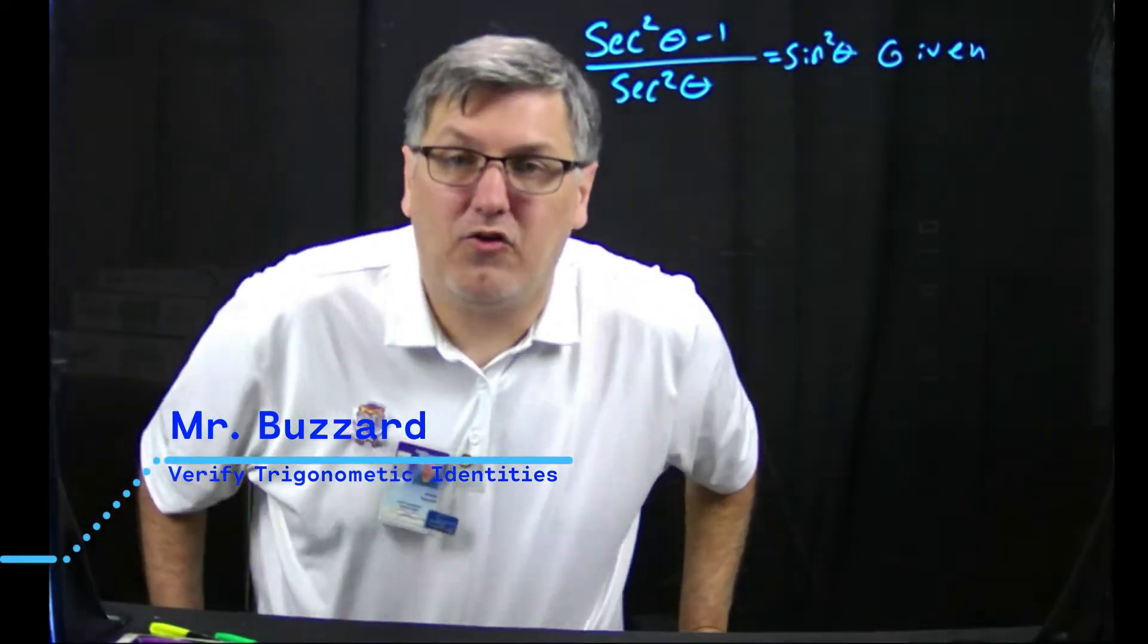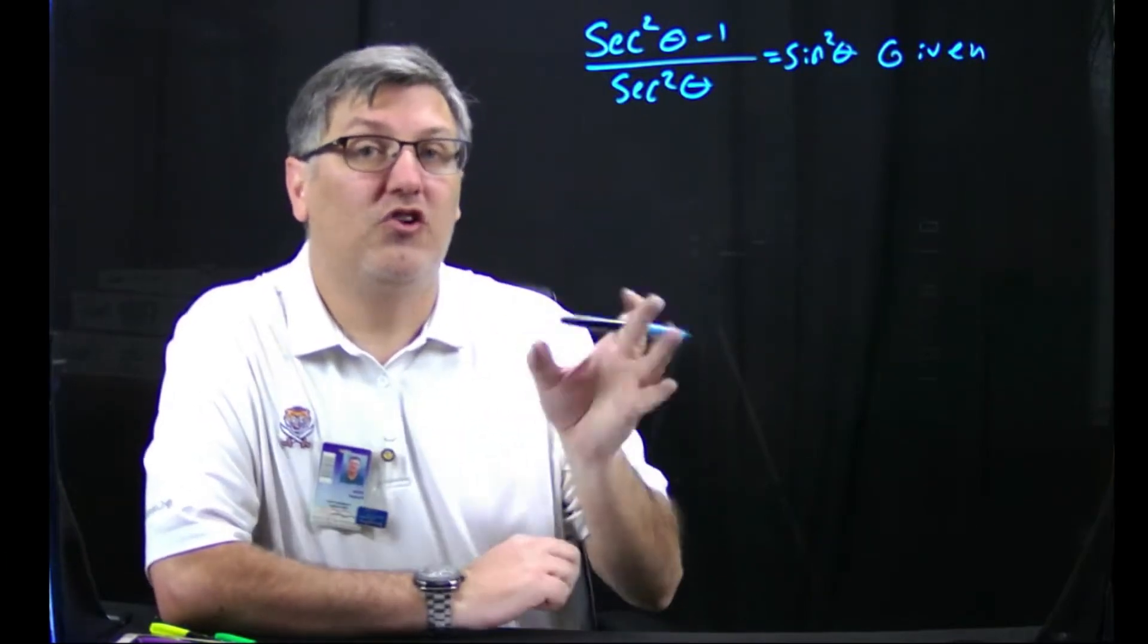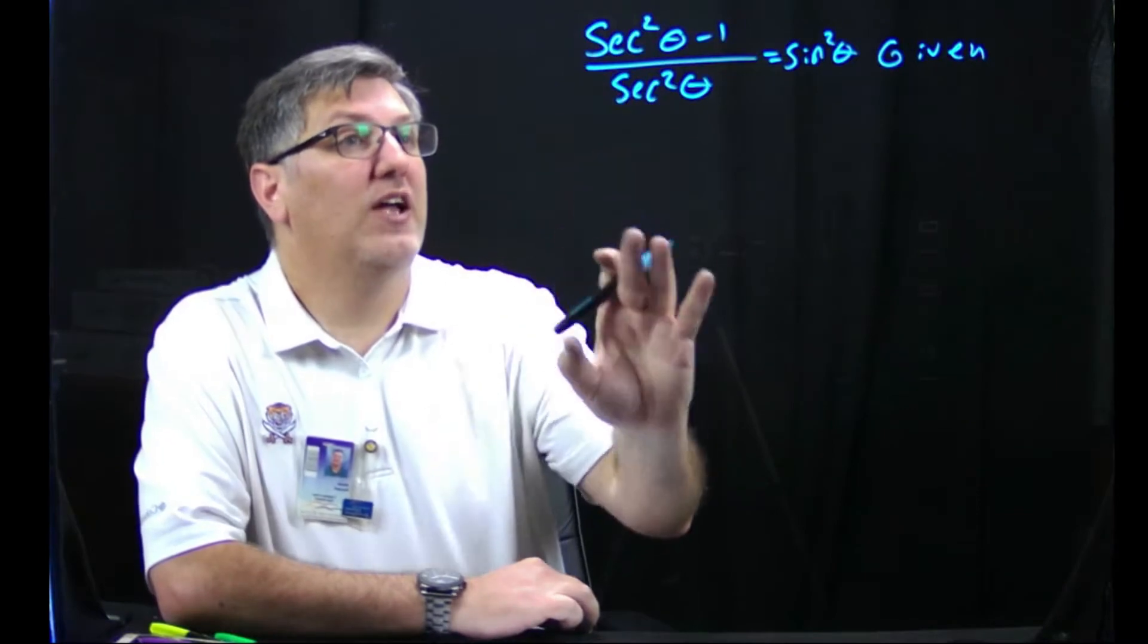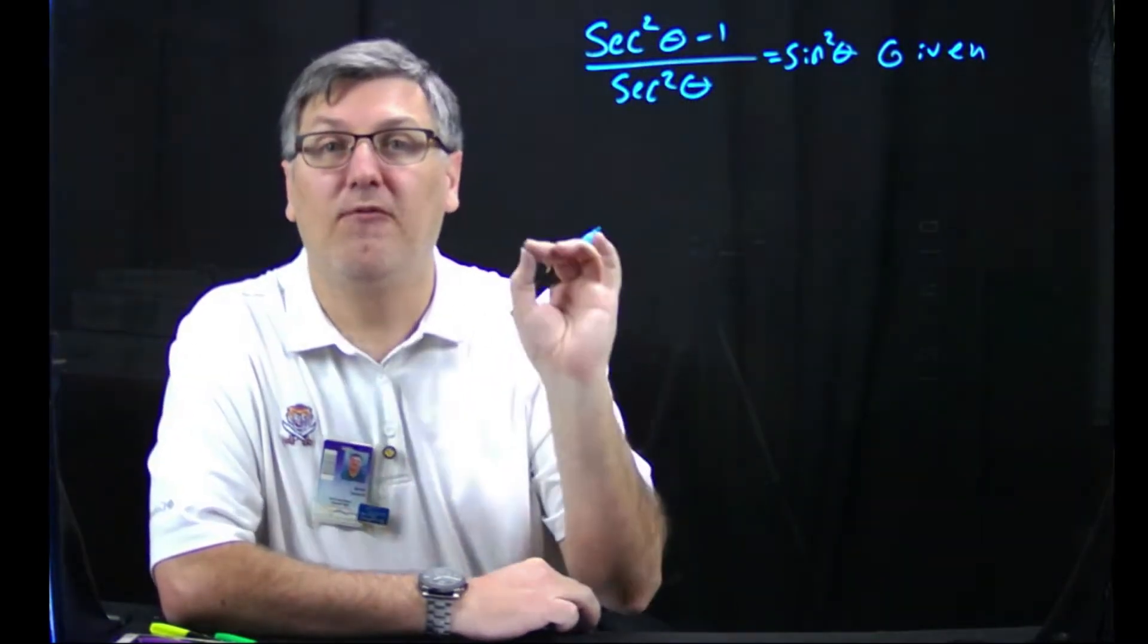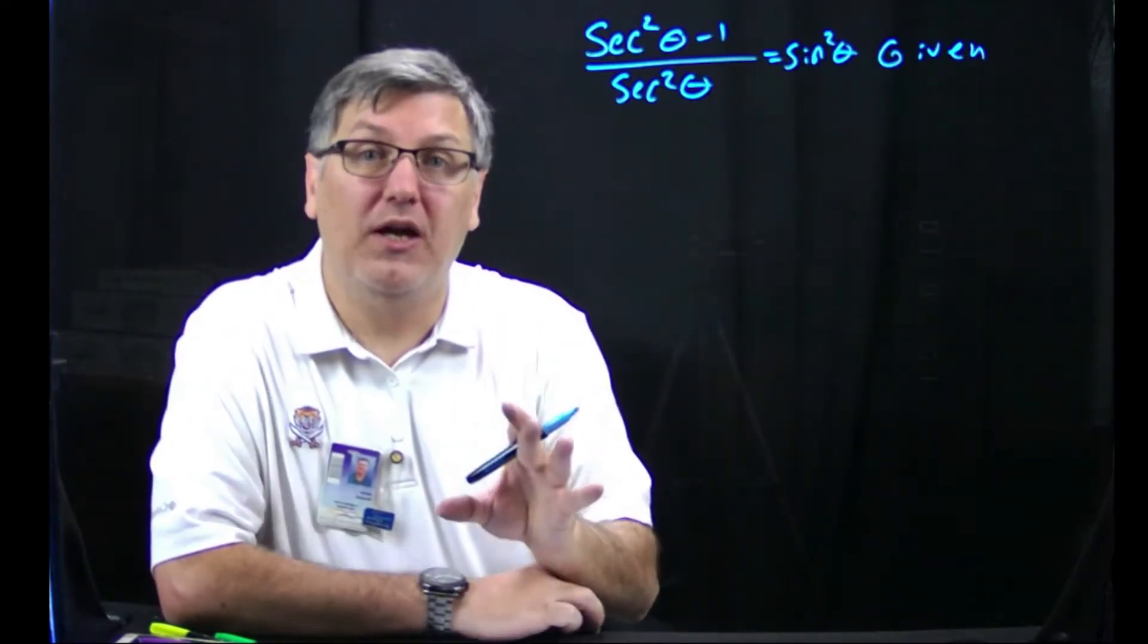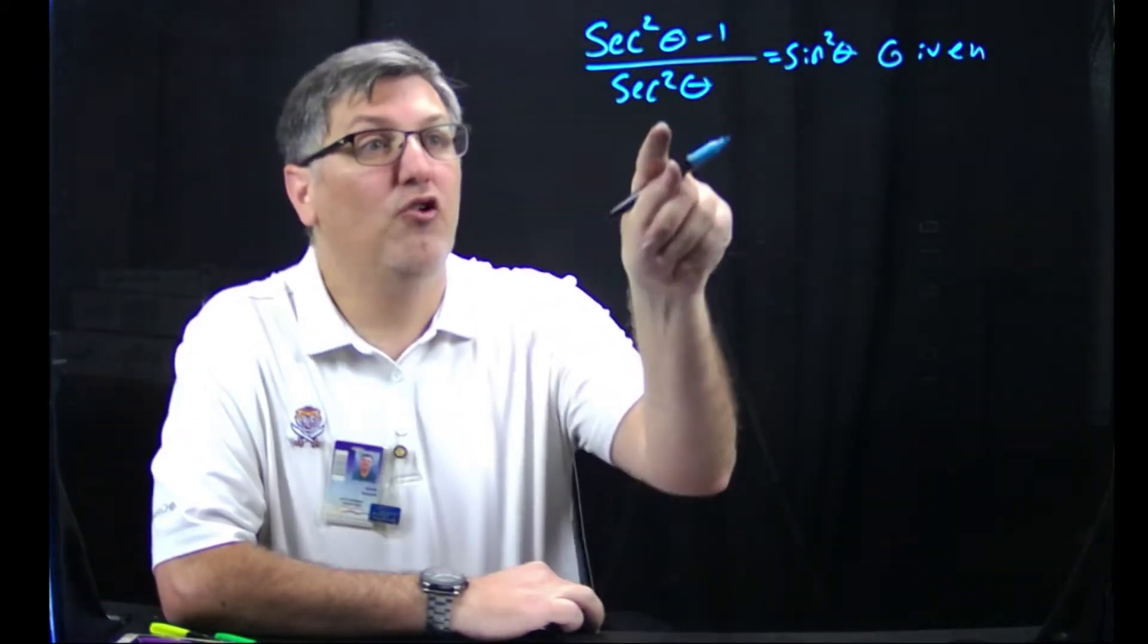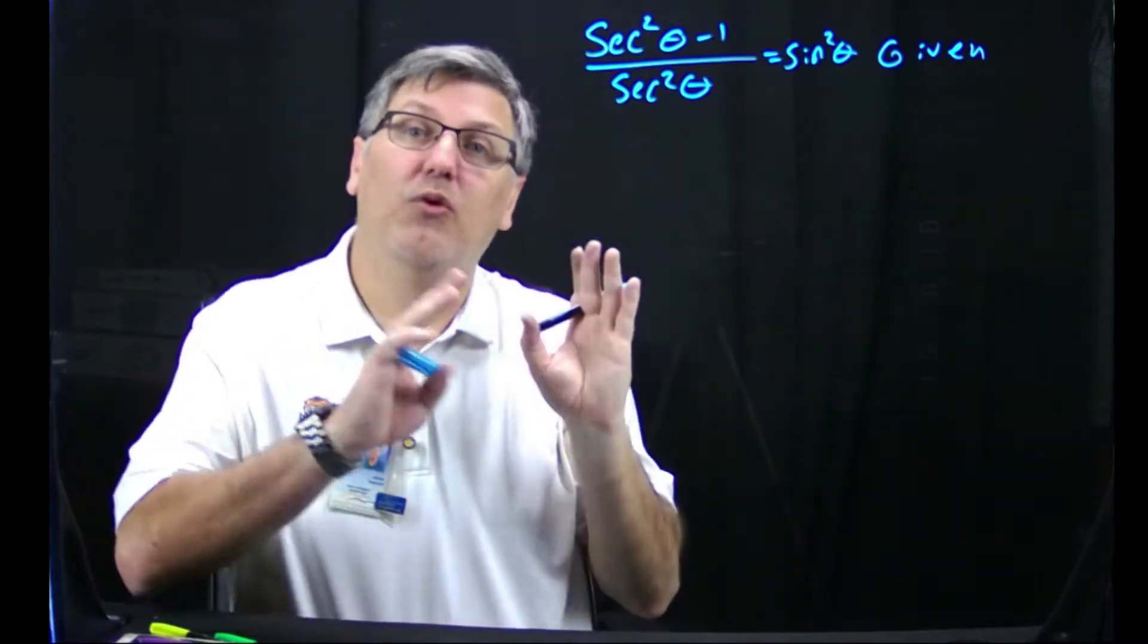What we're going to do now is verify. It's very much like simplify except I tell you what you actually have to simplify to. So I'm telling you here that sec²θ - 1 divided by sec²θ is going to simplify down to sin²θ. You have to show me every single step and every single reason on how you transform this side into sin²θ.